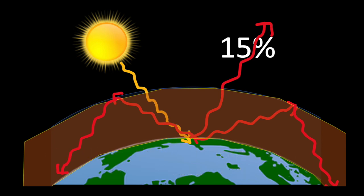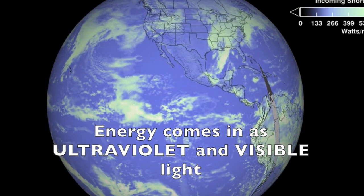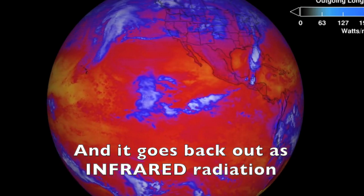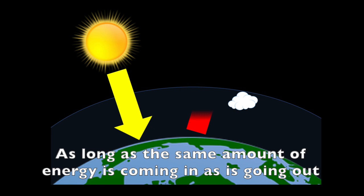We'll talk about how greenhouse gases work in another video. Now, when we're talking about Earth's energy budget, for the most part, energy comes in as ultraviolet and visible light, and it goes back out as infrared radiation. As long as the same amount of energy is coming in as is going out, the Earth's energy budget stays balanced.